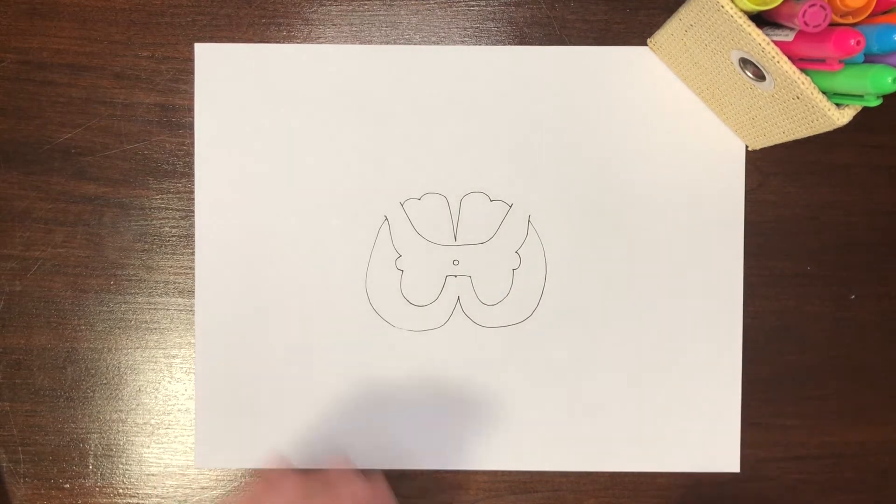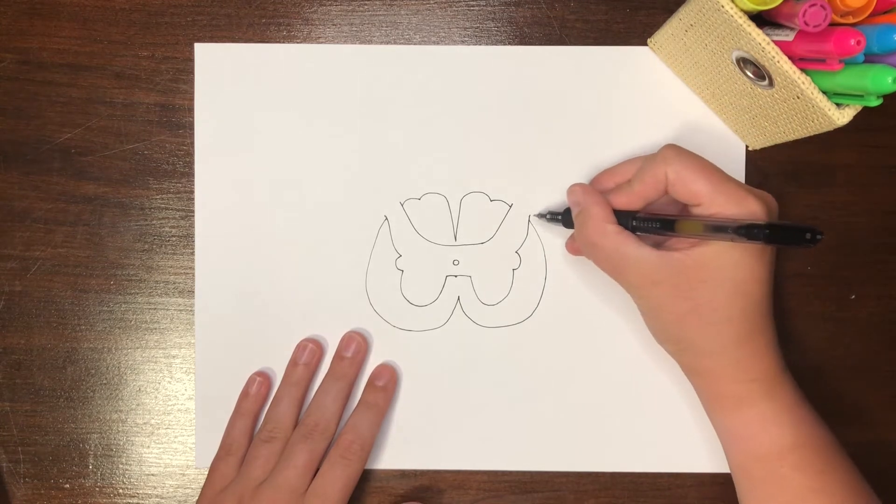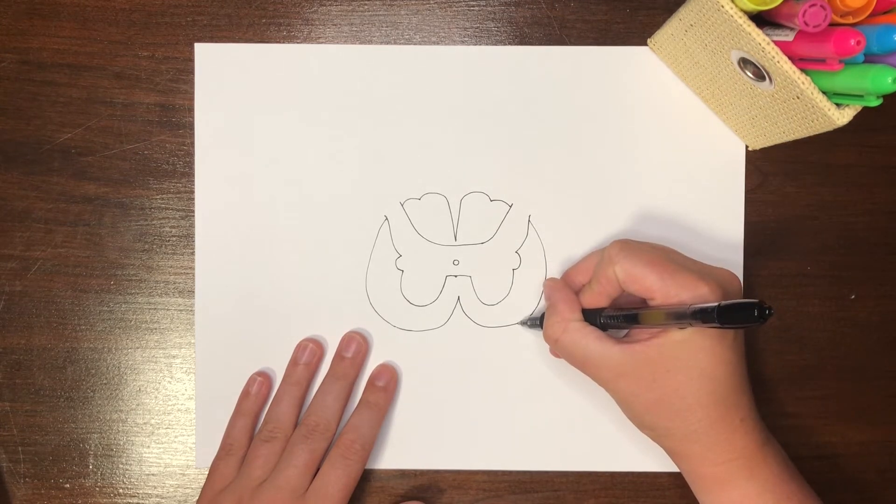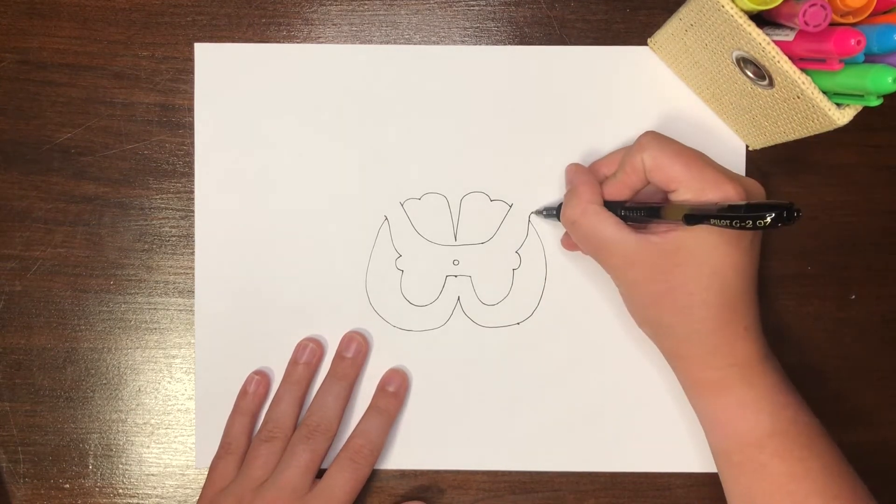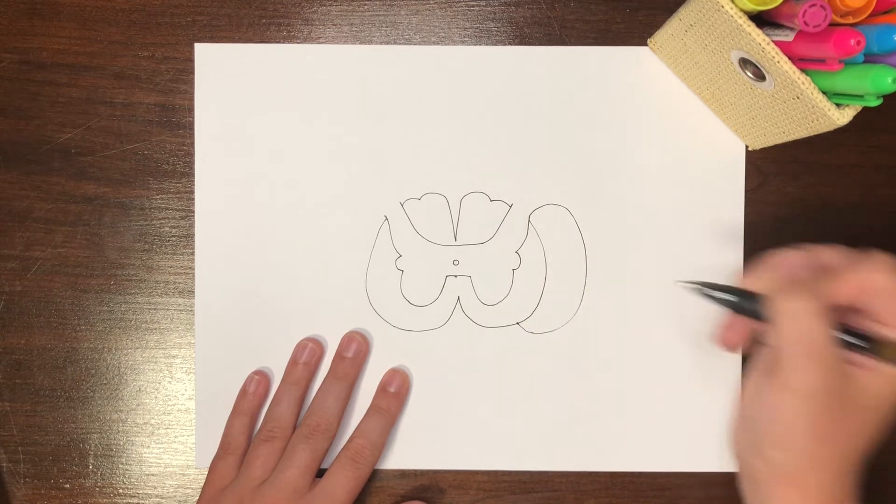Next, we will draw the major nerve projections from the spinal cord. First, we are going to draw a backward C extending from the outside portion of this gap on the right side to the bottom portion of our W.